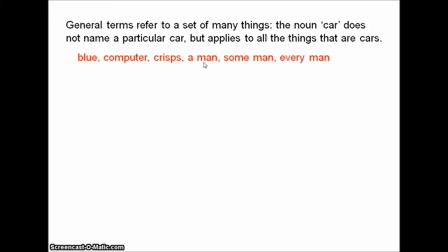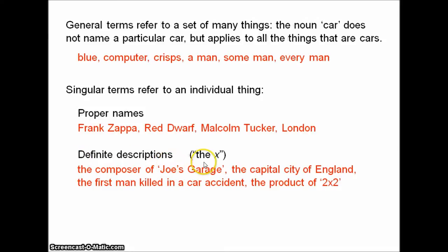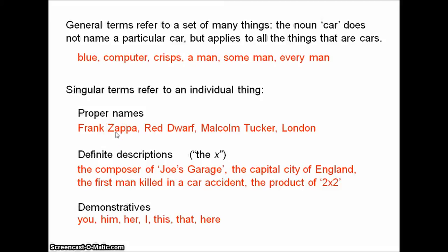Singular terms are terms that refer to an individual thing. These include proper names such as Frank Zappa, Red Dwarf — the name of the wonderful TV show — Malcolm Tucker, a fictional character, and so on. London is a city. Definite descriptions are phrases of the form 'the such-and-such': the composer of Joe's Garage, the capital city of England, the first man killed in a car accident, etc. And demonstratives: you, him, her, he, and so on. The point is, singular terms pick out an individual thing. With Frank Zappa, there's only one Frank Zappa. Obviously there might be other people with the same name, but under normal circumstances, when we use the name Frank Zappa, we're intending to refer to just one of those people, and context will determine which one.